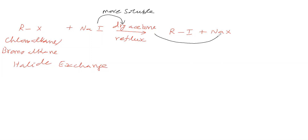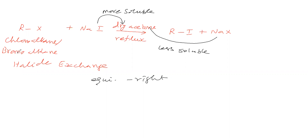Because NaI has more solubility and NaX has less solubility, the equilibrium favors the right side. Therefore, Chloro-Alkane or Bromo-Alkane can be converted into Iodo-Alkane. This method is good for primary alkyl halides and is called the Finkelstein reaction.